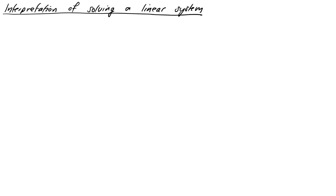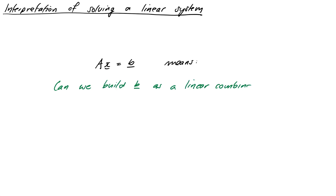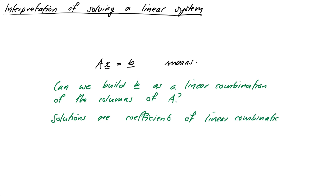Now we can look at interpreting solving linear systems in a slightly new way. We saw at the start of this video that a system of equations can be represented by an expression Ax equals b. So now we can reinterpret this: another way of looking at solving this system is, can we build the vector b as a linear combination of the columns of the matrix A? And the coefficients x are the solutions to our problem. We're going to spend a bit of time playing with this idea because it turns out to be fundamentally important when we try to describe things using vectors.